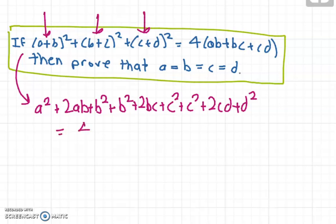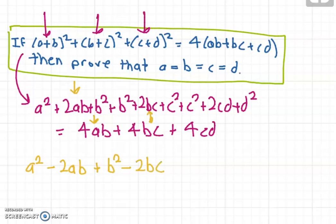And the right hand side, we can also expand it out, so 4ab + 4bc + 4cd. And now I'll bring the entire right hand side over to the left hand side. So we have 2ab minus 4ab, which gives minus 2ab plus b². And 2bc minus 4bc is negative 2bc. Now we have c². And here 2cd minus 4cd is minus 2cd, and finally we have plus d².